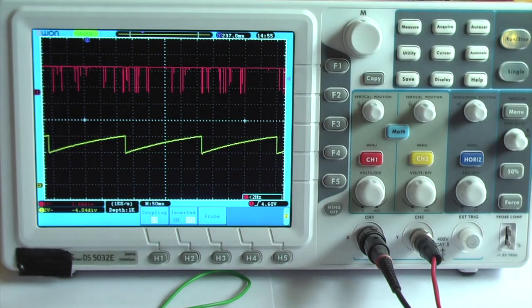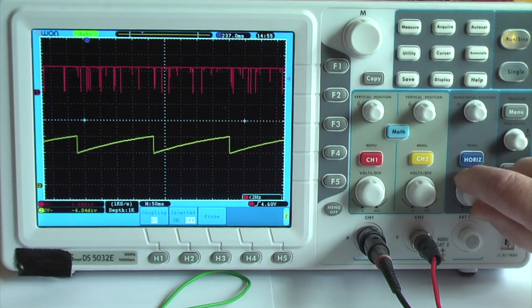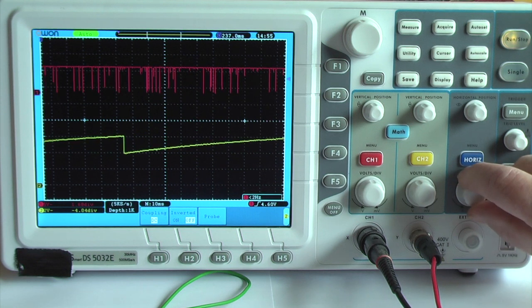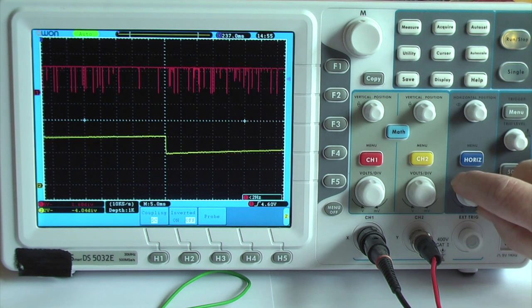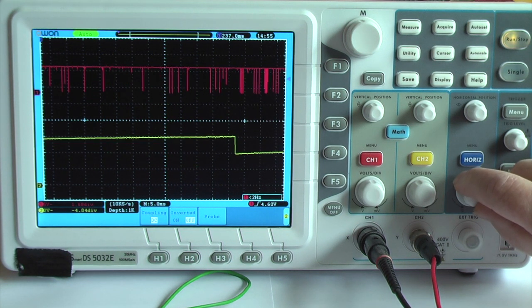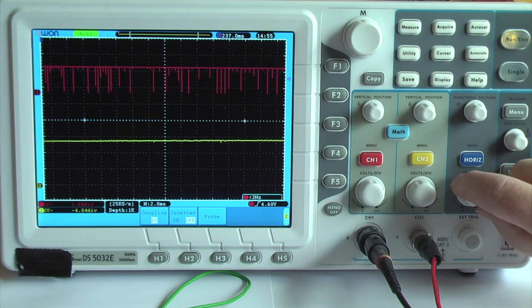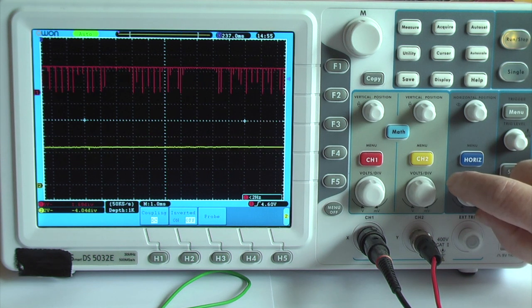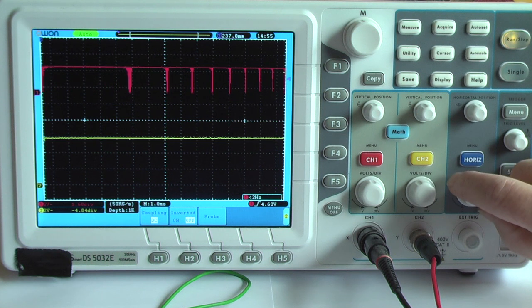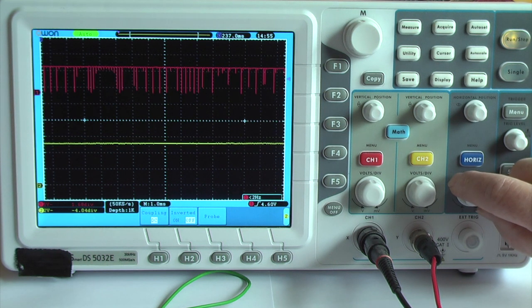The oscilloscope shows in yellow the sawtooth. In red, the output pulses on the electrode. Now I make the time base smaller and smaller. And now we see the pulses clearly at, in the end, 10 microseconds per division.